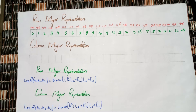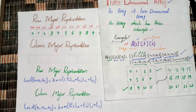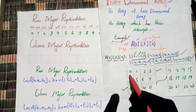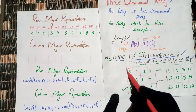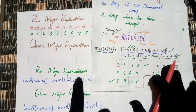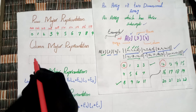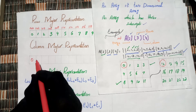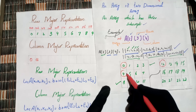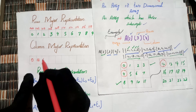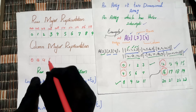This has been our row major representation. Now the column major representation is totally different. In column major, we take the first element of the first column of the first array, then the first element of the first column of the second array.